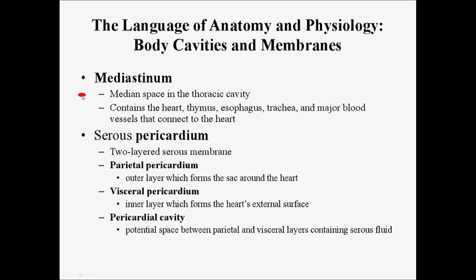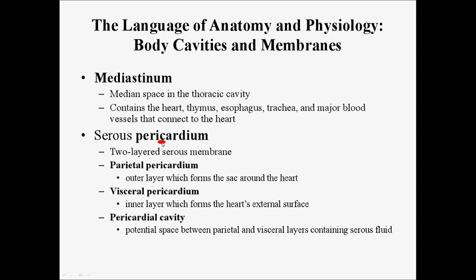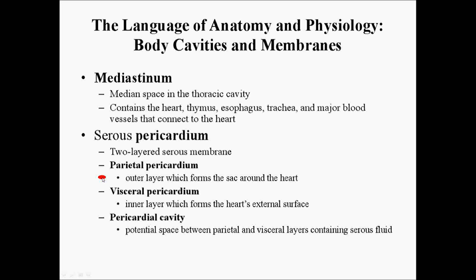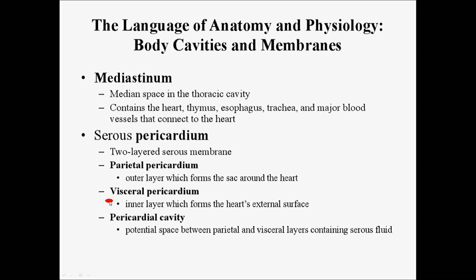The mediastinum is a space that sits at the medial aspect of the thoracic cavity. It contains the heart, thymus, esophagus, trachea, and major blood vessels that connect to the heart. Lining the mediastinum, you have a serous membrane called the pericardium. It is a two-layered serous membrane consisting of the parietal pericardium — the layer which forms the sac around the heart against the body cavity wall — and the visceral pericardium, which is the inner layer that forms the heart's external surface. The space between the parietal and visceral pericardium is called the pericardial cavity.